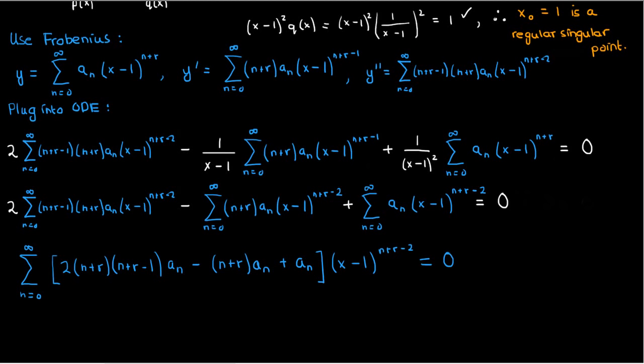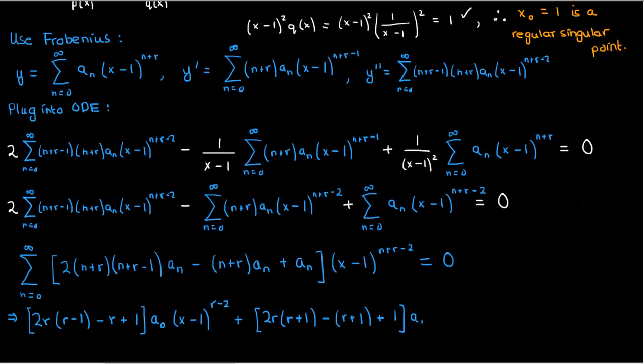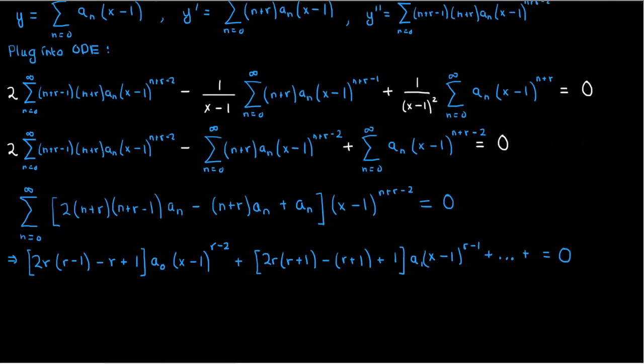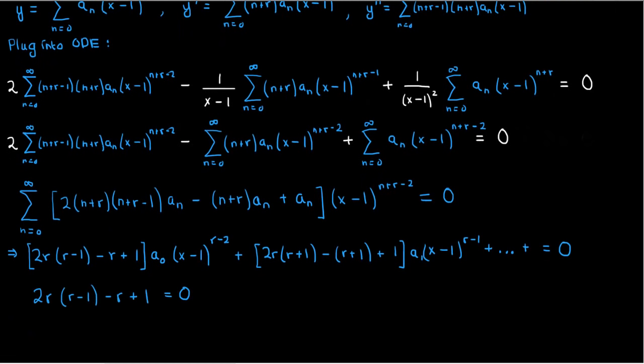If we expand out the first few terms in this summation, here's what we'll have. 2r(r-1) - (r-1) times a₀(x-1)^(r-2), this is for n = 0, and then plus 2r(r+1) - r + 1 times a₁(x-1)^(r-1), for n = 1, and then so on. Since the right-hand side is completely 0, all the coefficients on the left-hand side must also be 0. So let's look at the first coefficient, the one for the n = 0 term. This is a quadratic equation in terms of r. In the context of the Frobenius method, it's also called the indicial equation.